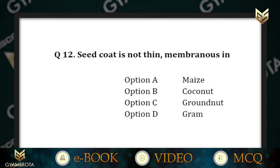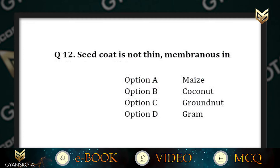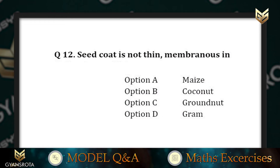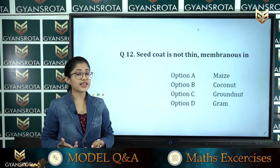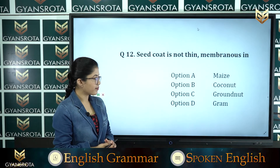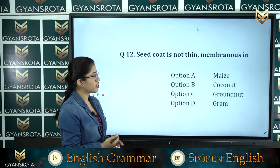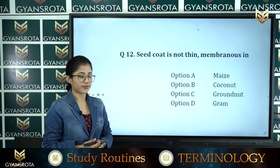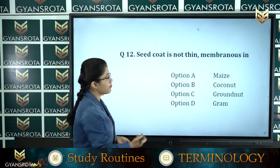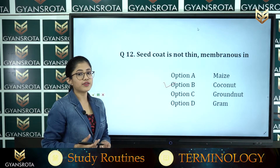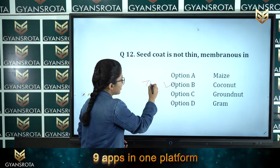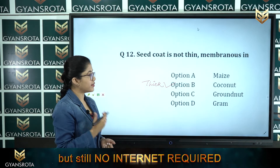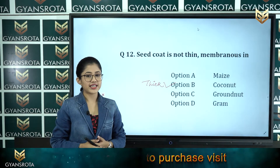Question number twelve: seed coat is not thin and membranous in — option A: maize, option B: coconut, option C: groundnut, option D: gram. Options A, C and D all have thin membranous seed coats, whereas in option B, coconut has a thick seed coat. So option B is the correct answer.